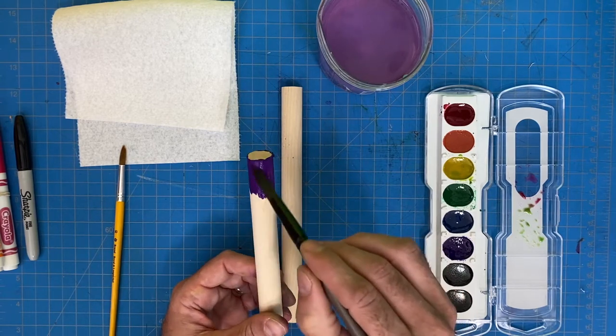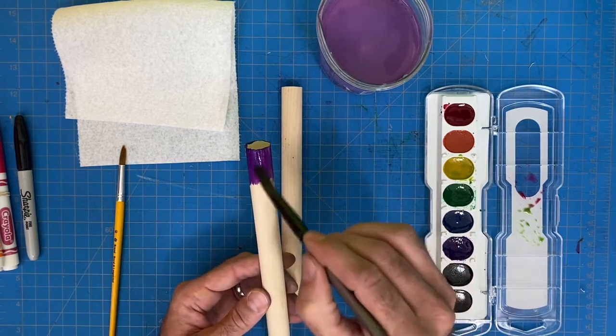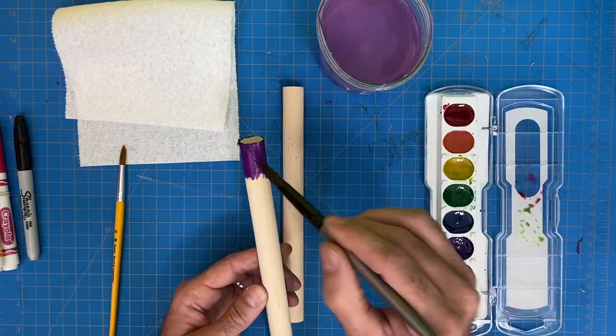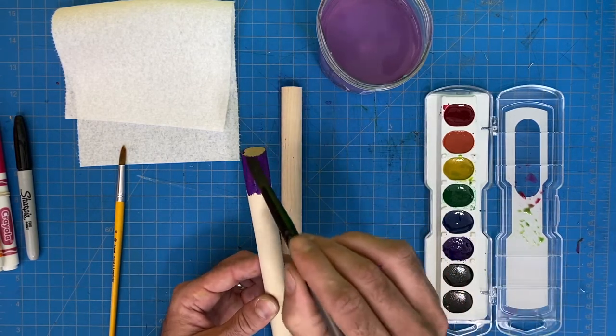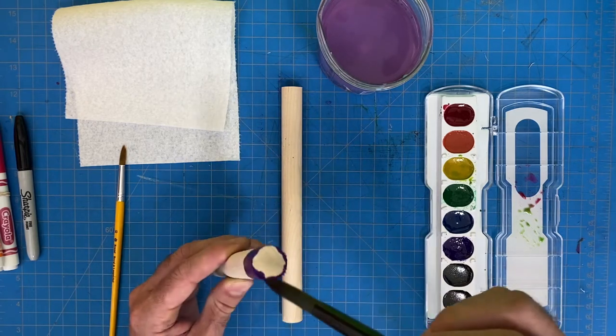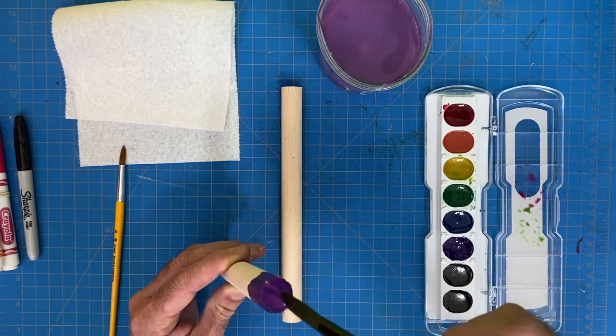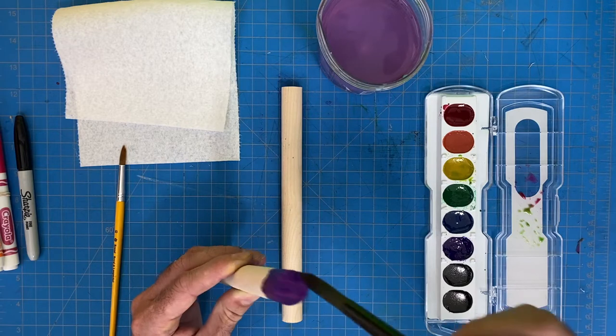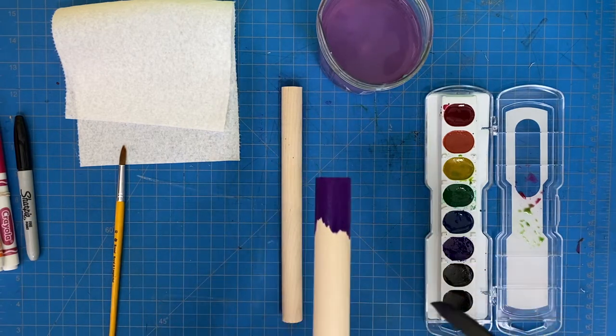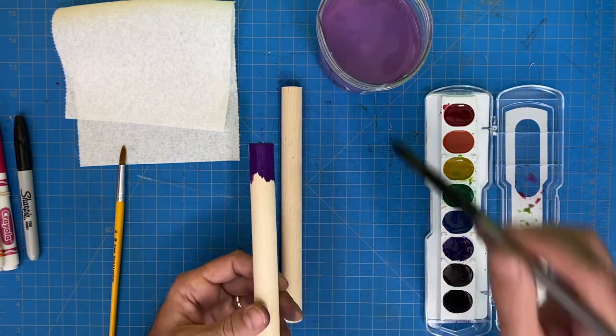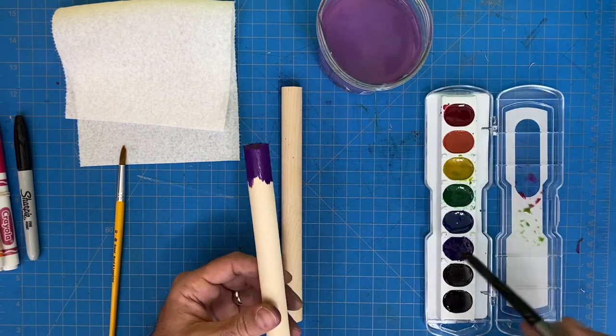So I start on one side with my purple. Watercolor is a layer-based paint, and so the more layers you add into the surface, the darker it will become. Another way you can get a dark, rich color is by using not very much water and mostly paint.